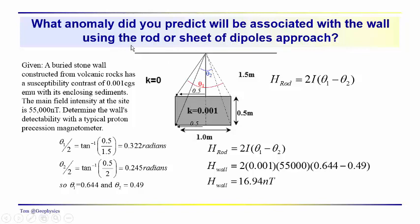Okay, so what did you come up with? What anomaly did you predict that you would see over this wall? Well, all the details are laid out here. We have a volcanic wall which has a relative susceptibility of 0.001 CGS units, dimensionless units, relative to the enclosing sediments. We've just let that susceptibility equal zero. We have a magnetizing field strength, the earth's main magnetic field in this area, 55,000 nanoteslas.